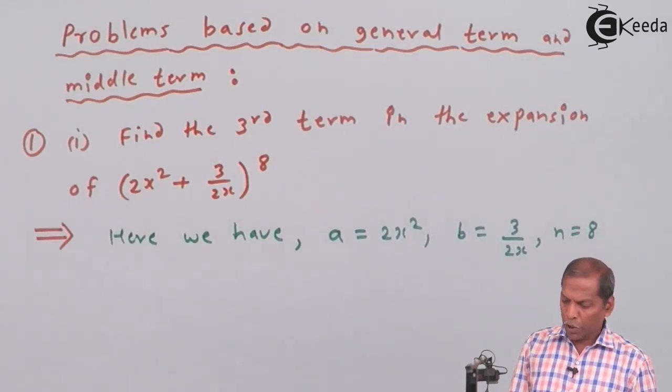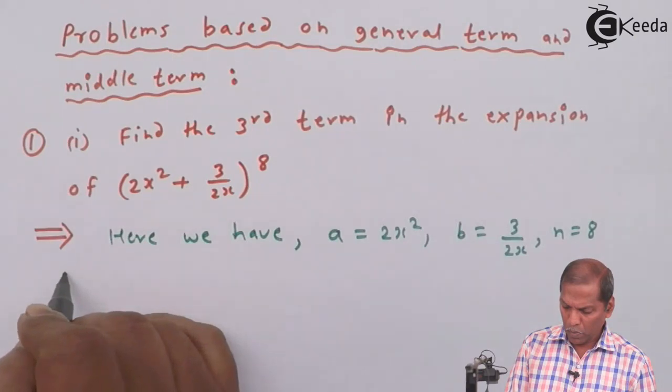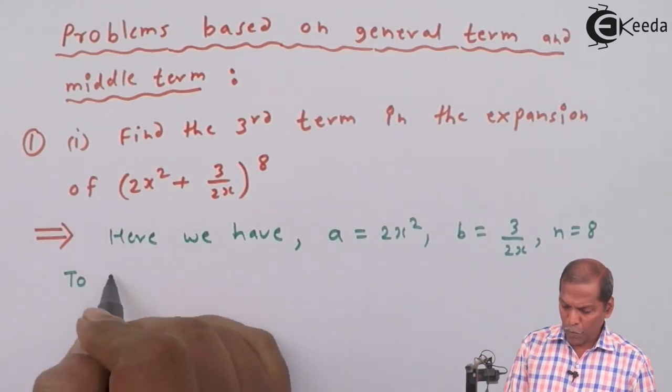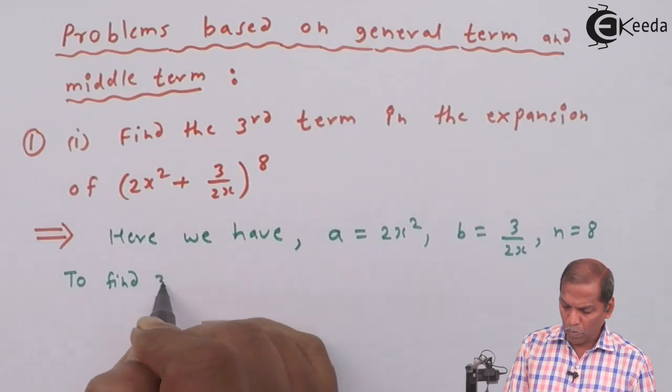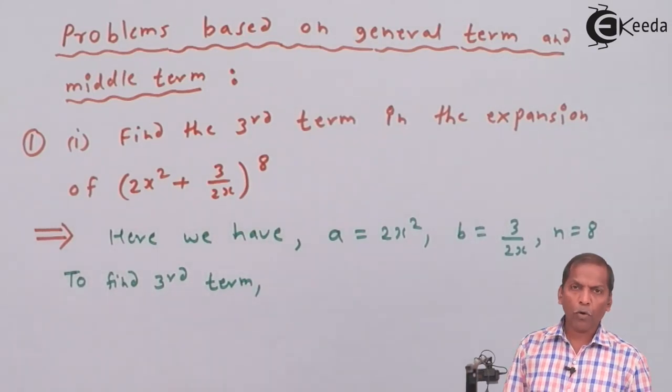Now in the question we have to find the third term. To find the third term we have to put r = 2.